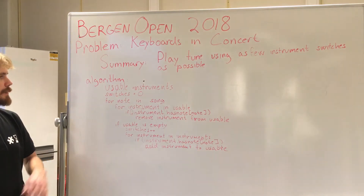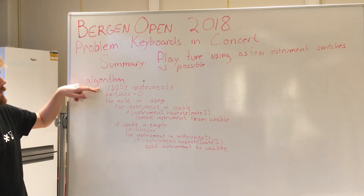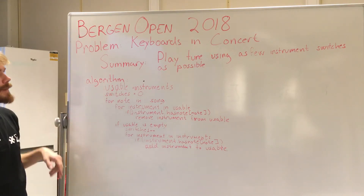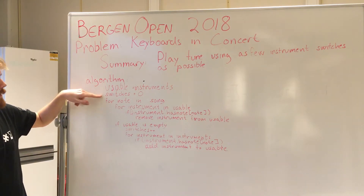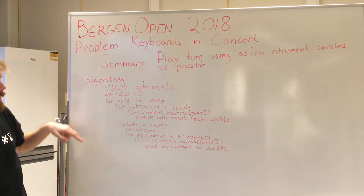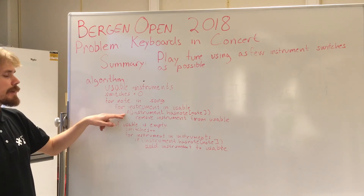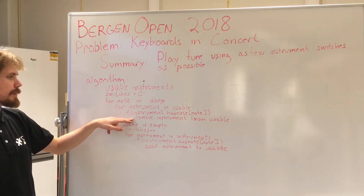So the algorithm looks like this. First, we will have a list called usable, which is initially the entire list of instruments. We count the number of switches — it's zero at the beginning. For each note in the song, for every instrument in the usable list, if the instrument cannot play the particular note, then we remove it from the usable list.